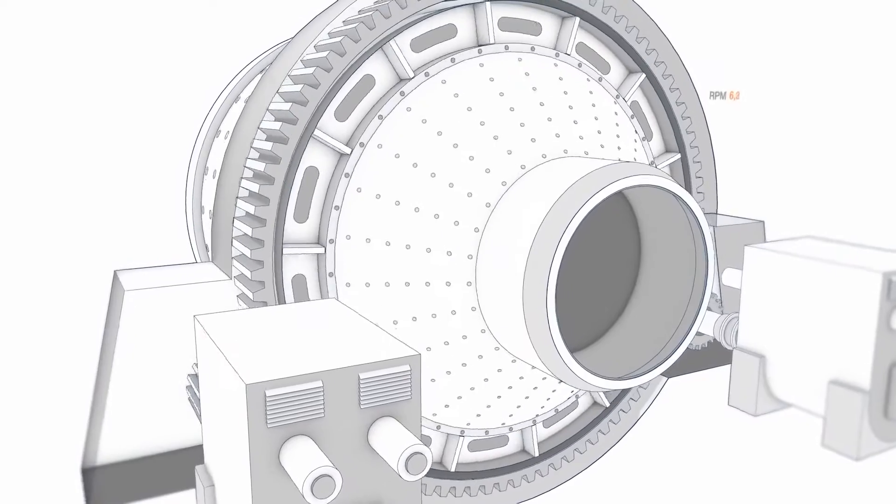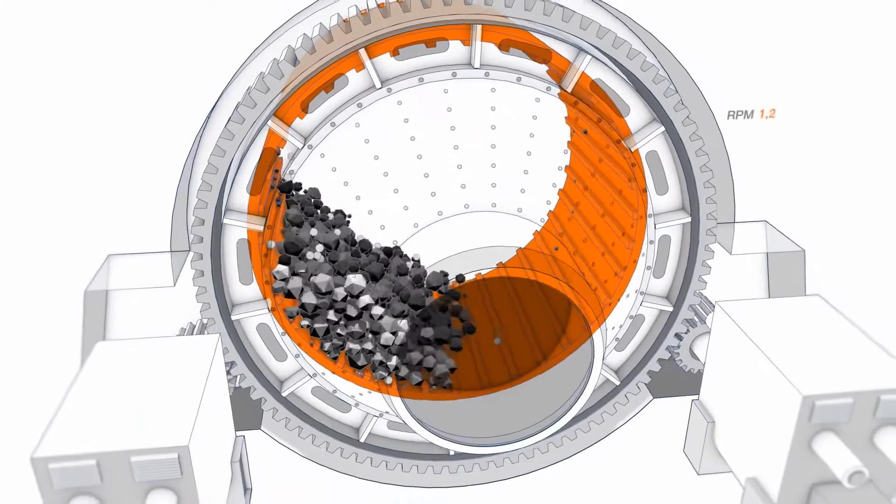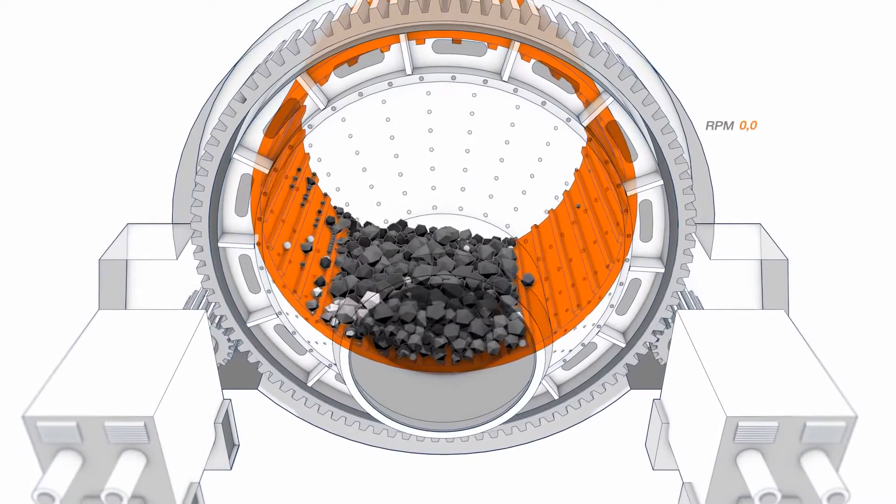Once the stop command is given, the controlled rollback function ensures that the mill is brought into a torque-free position without rocking, allowing a stable and smooth stop.